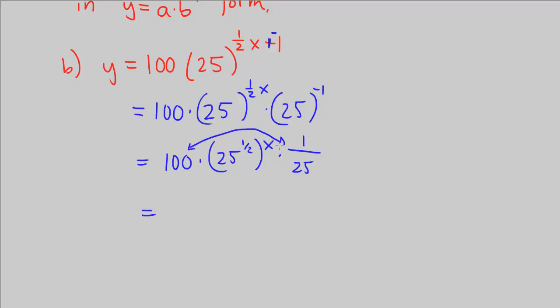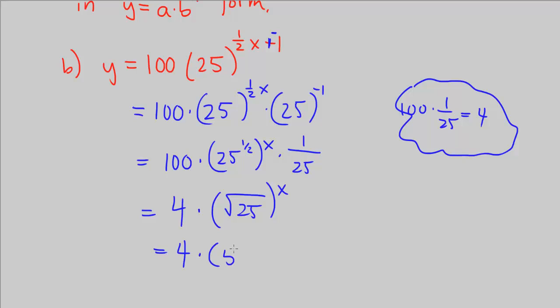These two can combine and we can say what's 100 times 1 over 25? You can plug in your calculator or you know it's just 100 divided by 25. If you have 100 or 1 dollar divided by 1 quarter, you know that's 4, 4 quarters in a dollar. So that's 4 times 25 to the one-half power, which is the same as square root of 25, which is equal to 4 times 5 to the power of x. And this here is in the form of a times b to the x.